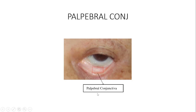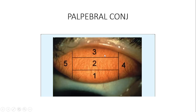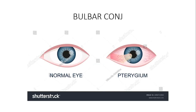Regarding the fornicial conjunctiva: there are four major fornices — the inferior fornix, the superior fornix, the medial fornix, and the lateral fornix. So the fornicial conjunctiva corresponds to these four regions.